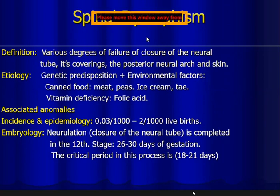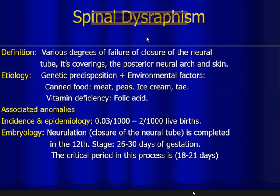The etiology of spinal dysraphism can be genetic predisposition plus environmental factors. Some say that canned food can play a role, like meats, peas, ice cream, and tea. And some say that vitamin deficiency, like folic acid, can play another role.